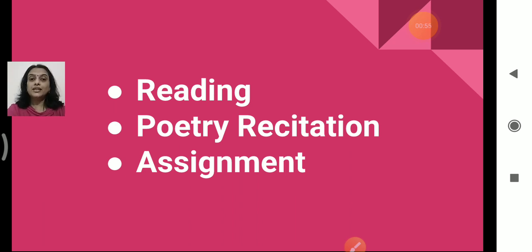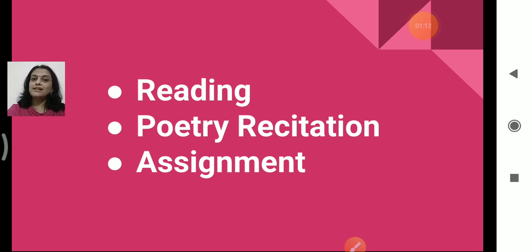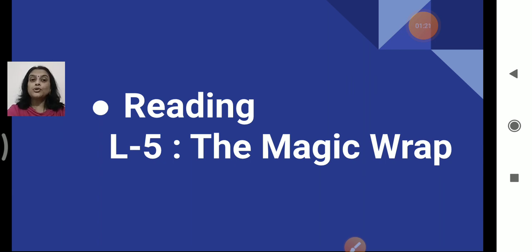So what are they? The first one is reading. The next is poetry recitation, and then assignment. You have three topics here: reading, poetry recitation, and assignment. Now what will be there for reading? You have to prepare yourself for lesson number 5, which is The Magic Wrap. So lesson 5, The Magic Wrap, will be there for your reading.